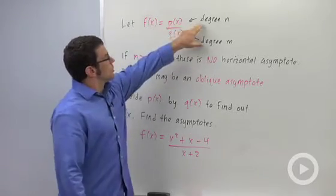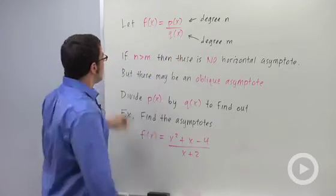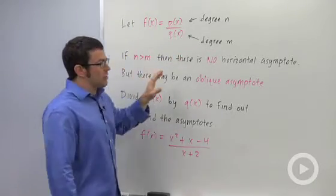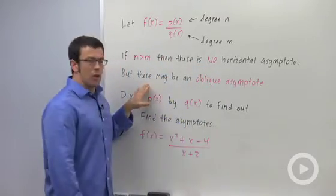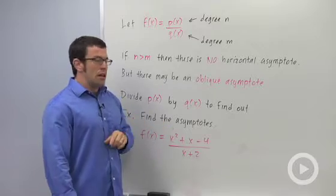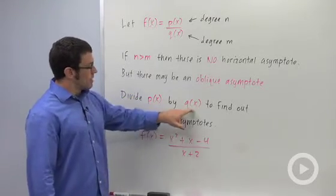So let's call the degree of the top polynomial n and the bottom one m. If n is greater than m, remember that there are no horizontal asymptotes. But there may be something called an oblique asymptote. And the way to find out is to divide the top polynomial by the bottom polynomial.